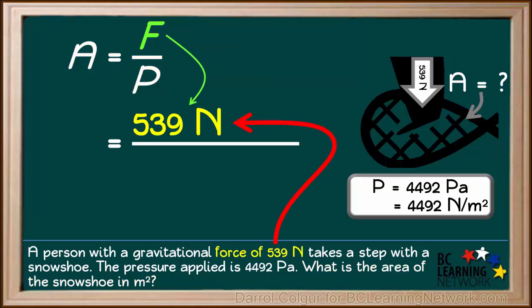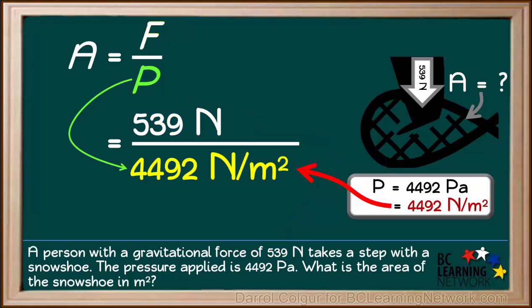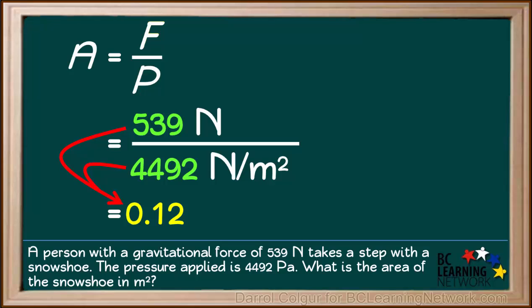In order to solve for A, we'll start by substituting 539 Newtons in for force. Then we'll substitute 4492 Newtons per square meter in for pressure. 539 divided by 4492 is equal to 0.12.